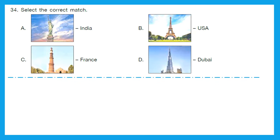Question 34: Select the correct match. Option A is the Statue of Liberty — it is in the USA, so the match with India is incorrect. Option B is the Eiffel Tower — it is in France, so the match with USA is incorrect. Option C is Qutub Minar — it is in India, but that is also a wrong match here. Option D is Burj Khalifa — it is in Dubai. So this is the right answer. Option D is the right one.